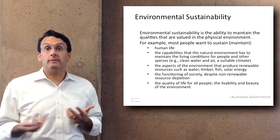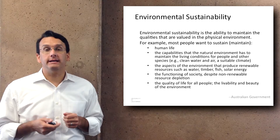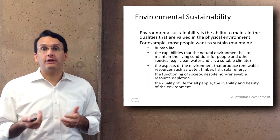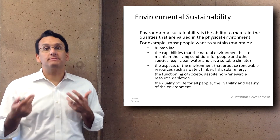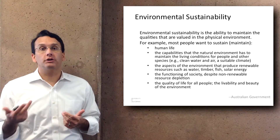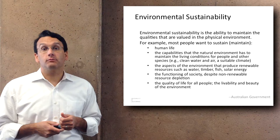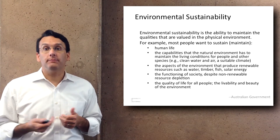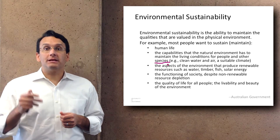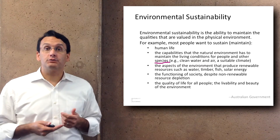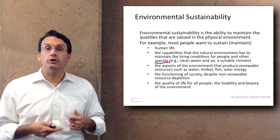The Australian government has a definition of environmental sustainability that includes a variety of different aspects: human life, the capabilities of the natural environment to maintain living conditions for people and other species, the aspects of the environment that produce renewable resources such as water, timber, fish, and energy, the functioning of society despite non-renewable resource depletion, and the quality of life for all people, the livability and beauty of the environment.